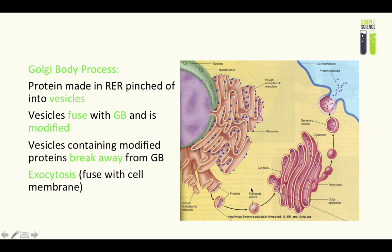In the third step, vesicles containing the modified proteins break away from the Golgi body — these are also known as secretory vesicles. The fourth step is simply exocytosis, where the vesicle fuses with the cell surface membrane, releasing the proteins to the outside of the cell.